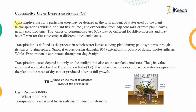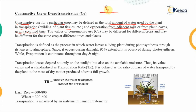Consumptive use for a particular crop is defined as the total amount of water which is used by the plant in the transpiration process — that is the building up of plant tissues — and the evaporation from the adjacent soils or from the plant leaves, specified within a given duration. For example, consider the ground level with a certain crop growing in the field having a certain root zone beneath it.